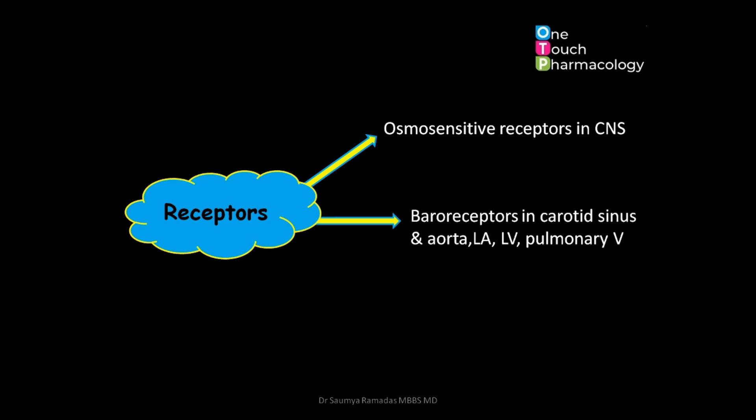Baroreceptors present in the carotid sinus, aorta, left atrium, left ventricle, and the pulmonary vein sense changes in blood pressure or blood volume. The hepatic portal osmoreceptors sense the change in oral salt load.